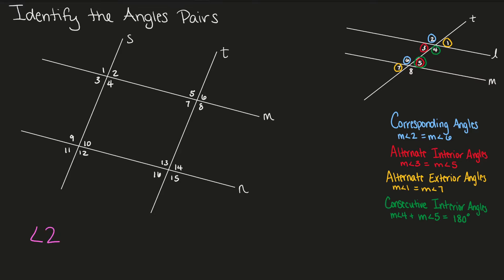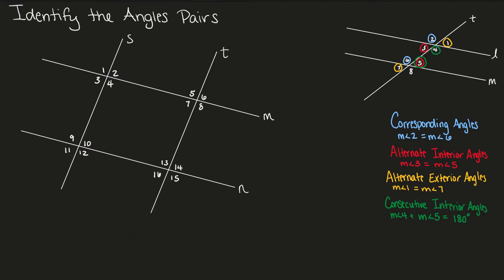Let's look at angle 2 and angle 10. Angle 2 and angle 10 are on the same side of our transversal and on the same side of our parallel lines, so they are corresponding angles. Next, let's look at angle 4 and angle 9. Angle 4 and angle 9 are on opposite sides of our transversal — so they're alternating — and they are on the interior of our parallel lines. Therefore, angle 4 and angle 9 are alternate interior angles.